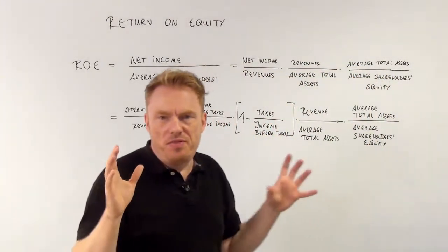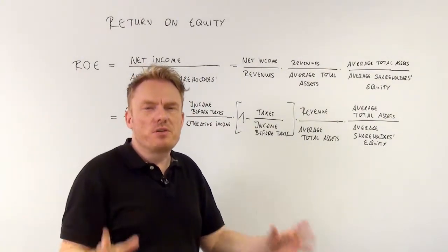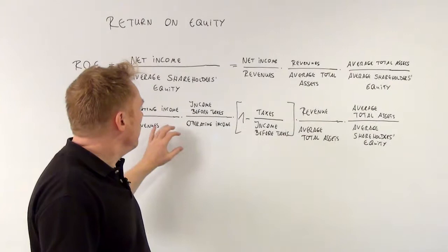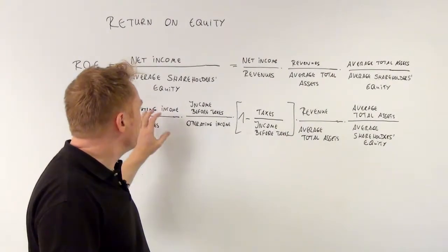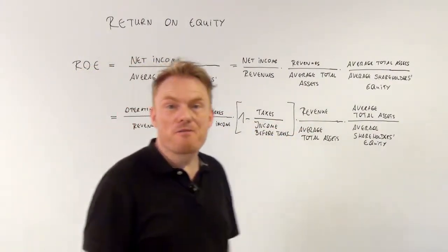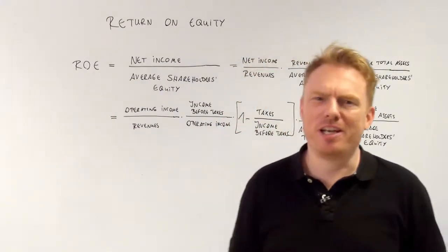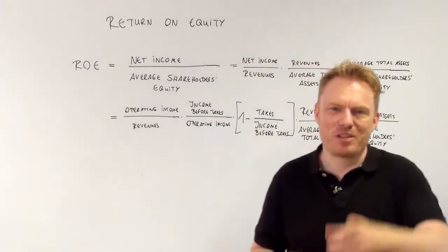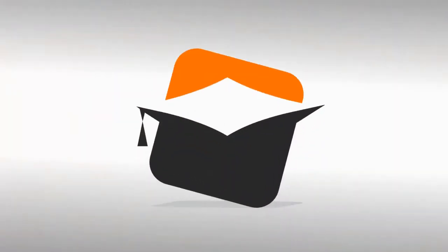So we just expanded those fractions and then cancelled them. That is the third way to compute return on equity, consisting of five fractions. It's put a bit complicated, but that's the way it is sometimes. Thank you for watching.